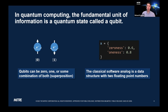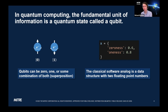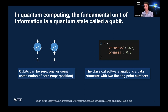At the hardware level, qubits are implemented in real physical systems. The most popular right now is superconducting circuits. There's also trapped ion, and interesting research on using photons. Basically, you need any system that behaves according to the laws of quantum mechanics.